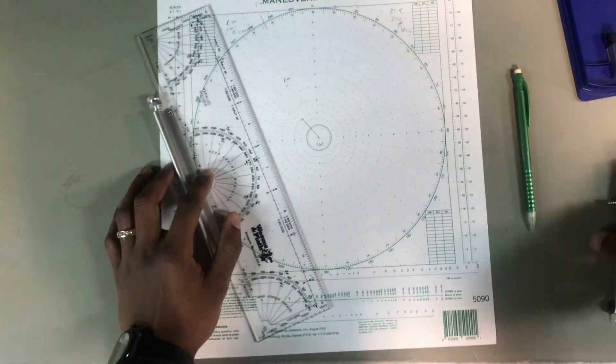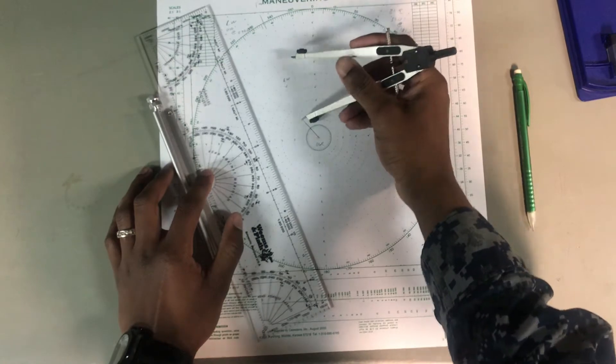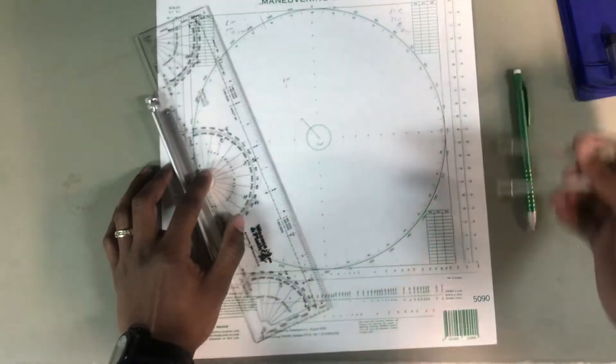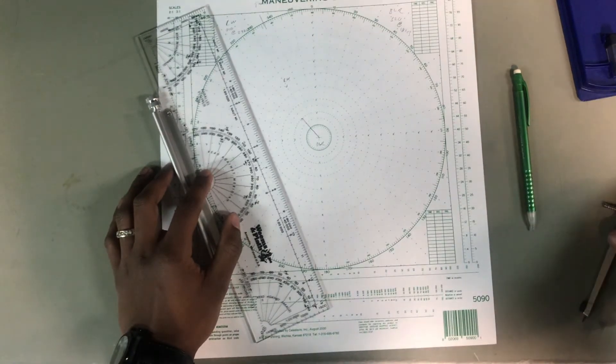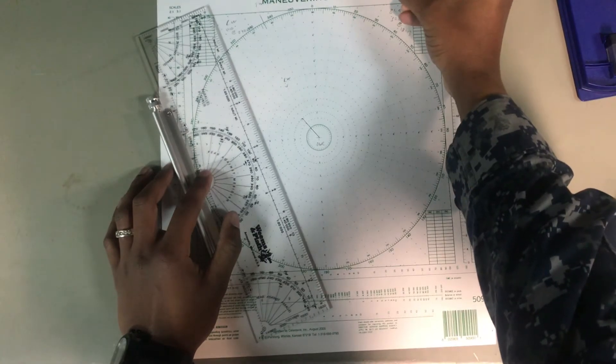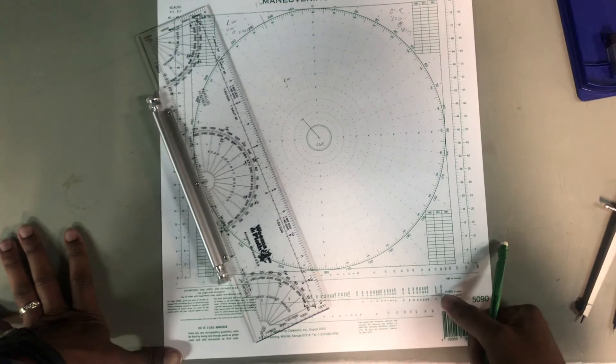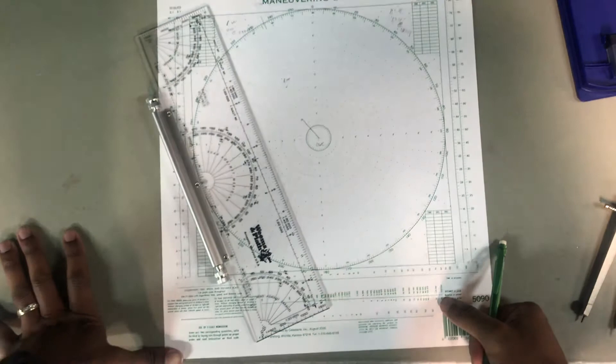Now, the distance between your course and speed heading arrow, and your backwards arrow for relative wind, will be your true wind speed. And we got it at 14 knots. So true winds, 336 at 14 knots. Boom. Pretty simple.